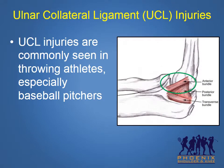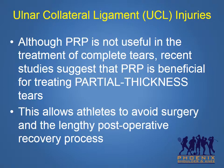Ulnar collateral ligament injuries of the elbow are commonly seen in throwing athletes, especially baseball pitchers. Historically, treatment for this injury involves surgical reconstruction, which is typically associated with a 12-month minimum recovery process. Although PRP is not useful in the treatment of complete tears, recent studies suggest that PRP is beneficial for treating partial-thickness ulnar collateral ligament tears, allowing athletes to avoid surgery and the lengthy postoperative recovery process.